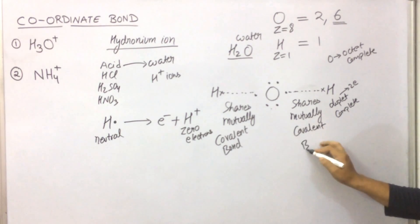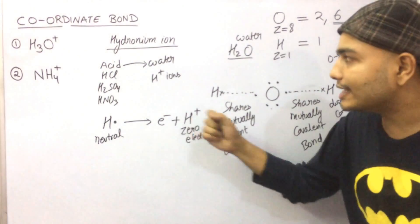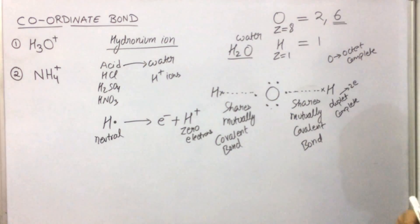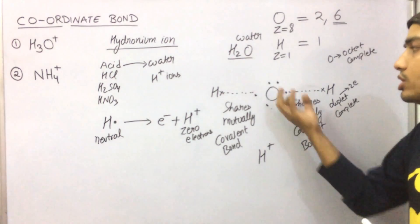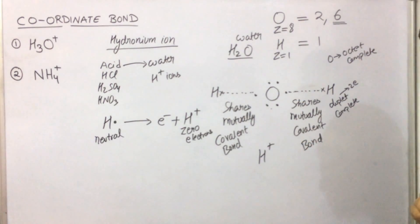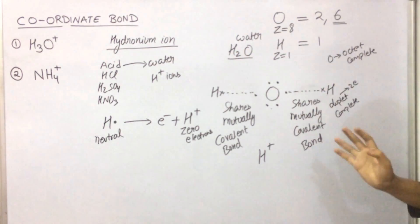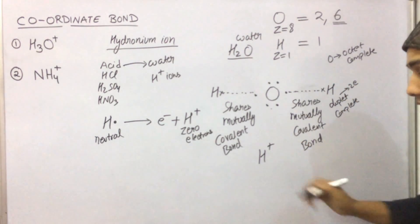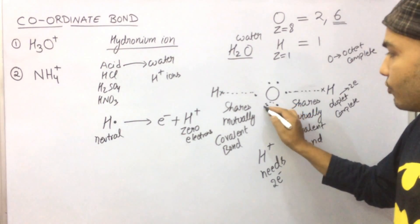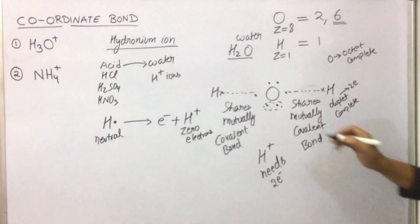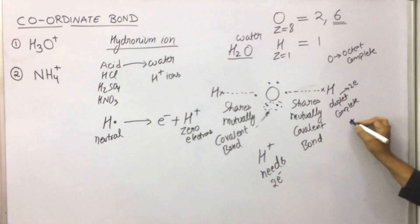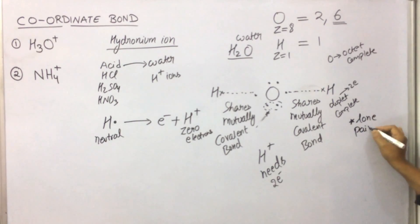Now what about the H+ that came into water because an acid dissolved? This H+ comes crying for two electrons to this water. Water is stable — oxygen has eight electrons, octet complete; hydrogen has its duplet complete — there is a good covalent bond with mutual sharing. But this H+ needs two electrons. These two electrons of oxygen which are not participating in sharing are called the lone pair of electrons.